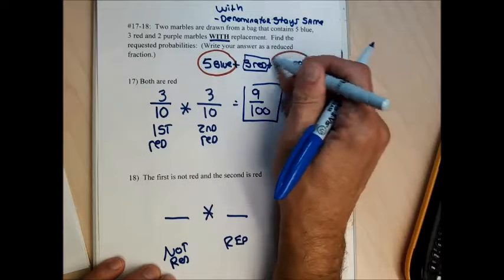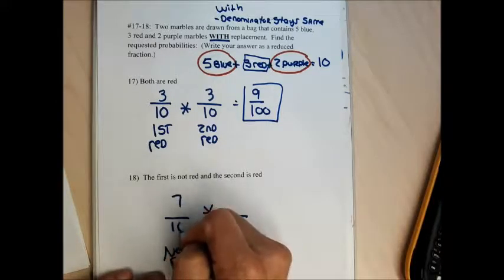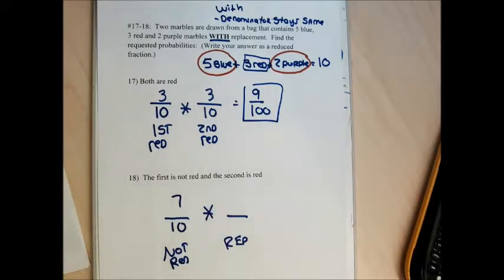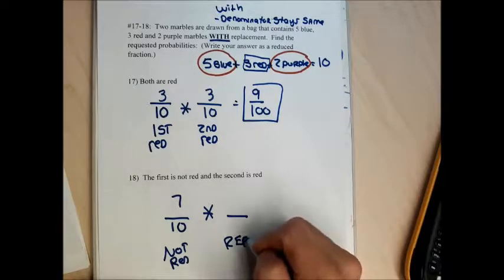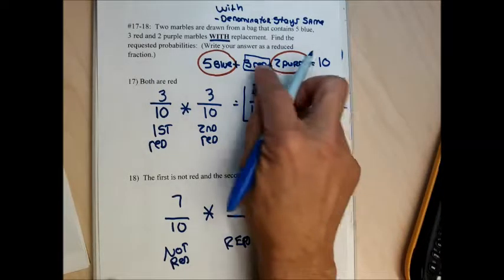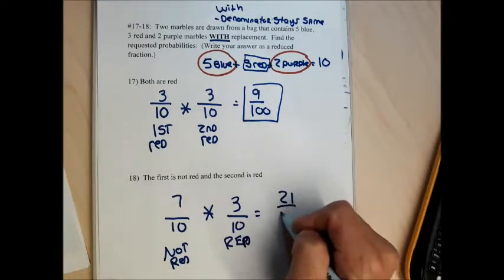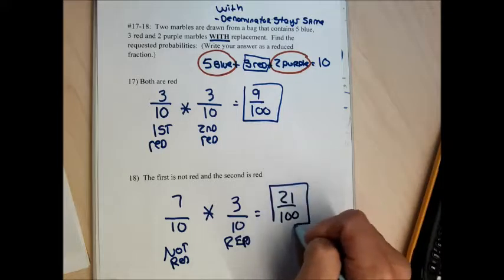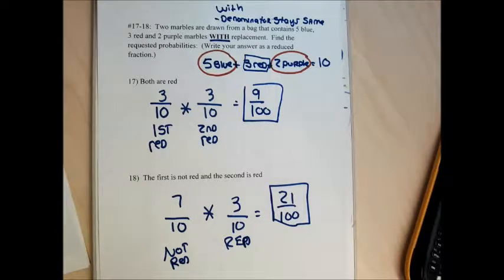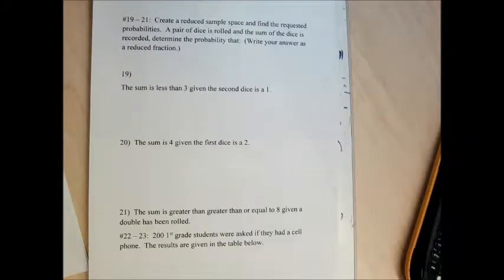For problem 18, I need the first marble to be not red and the second to be red. There are five blue plus two purple, so seven of the ten marbles aren't red. The first fraction is 7 over 10. Since I put the marble back, the second fraction is still 3 over 10. Multiplying gives 21 over 100.